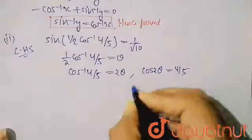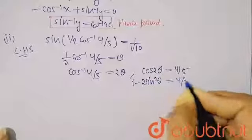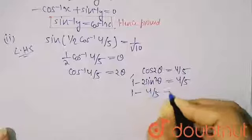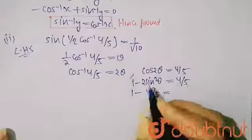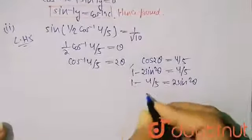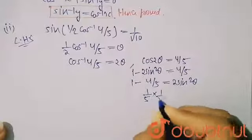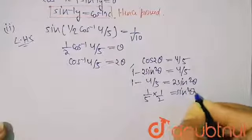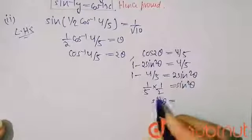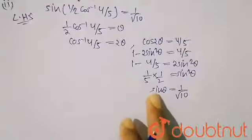Using the identity cos 2θ = 1 − 2sin²θ, we have 1 − 2sin²θ = 4/5. Rearranging: 1 − 4/5 = 2sin²θ, so 1/5 = 2sin²θ, giving sin²θ = 1/10. Therefore sin θ = √(1/10) = 1/√10.